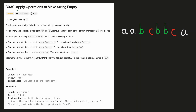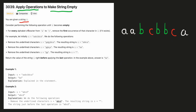Let's look at a very tricky problem in which we have to apply certain operations to make a string empty. We are given a string s and we have to do a certain operation until the string becomes empty. In every operation, for every character from a to z, we have to remove its first occurrence.